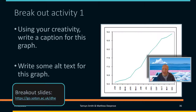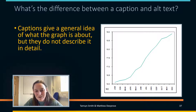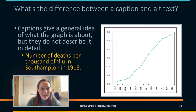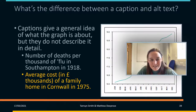We're not giving you any context, so use your creativity — there's not necessarily a right or wrong answer. It depends on what contextual information is around something and how much detail is required. Captions give the general idea of the graph. For example: 'Number of deaths per thousand of flu in Southampton in 1918' — that's what it could be about, just a title. Another example: 'Average cost in thousand pounds of family home in Cornwall in 1975' — it doesn't tell you the cost is increasing month on month; it's just telling you what it's about in general.